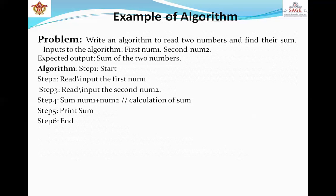For example of algorithm, write an algorithm to read two numbers and find their sum. Input to the algorithm: first number one and second number two. Expected output: sum of the two numbers. Algorithm steps: Step 1, start. Step 2, read input the first number one. Step 3, read input the second number two. Step 4, sum equals number one plus number two. This is the calculation of sum. Step 5, print sum. Step 6, end. This is the example of algorithm to read two numbers and find their sum.